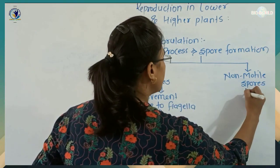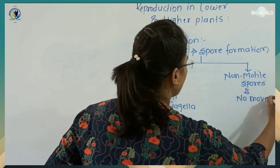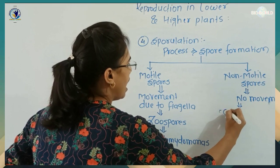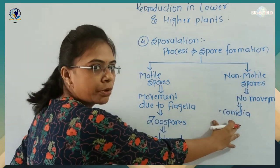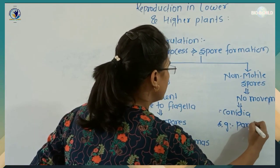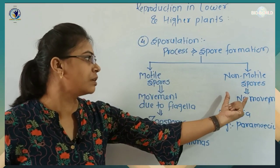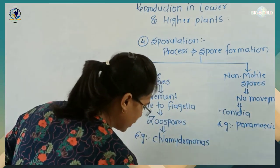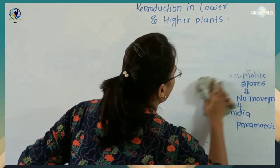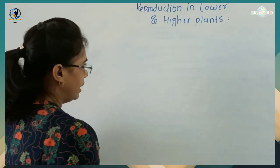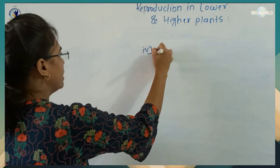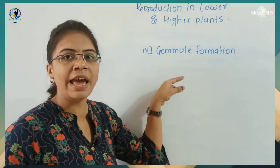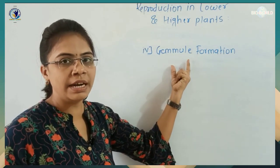Non-motile spores do not show movement due to the absence of flagella, and these spores are called conidia. The example given is Penicillium. These non-motile spores are called conidia. So that is the fourth mode of asexual reproduction — sporulation. Another mode of asexual reproduction is gemmule formation, but it is a mode of asexual reproduction in lower animals which we will discuss in the next lesson on human reproduction.